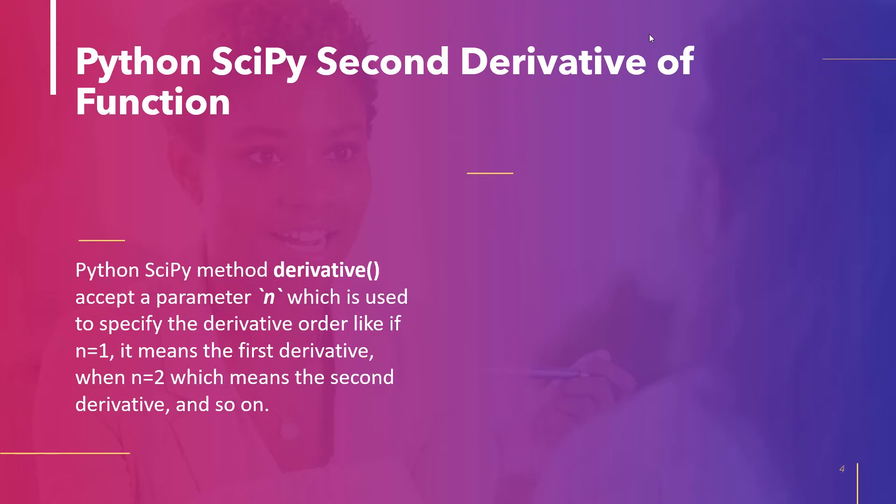The Python SciPy `derivative` method accepts an argument `n` that specifies the order of the derivative — for example, the first derivative if n equals 1, and the second derivative if n equals 2, and so on.